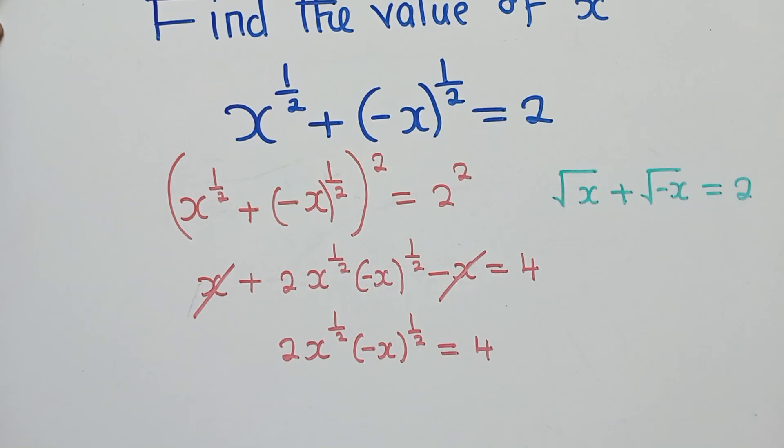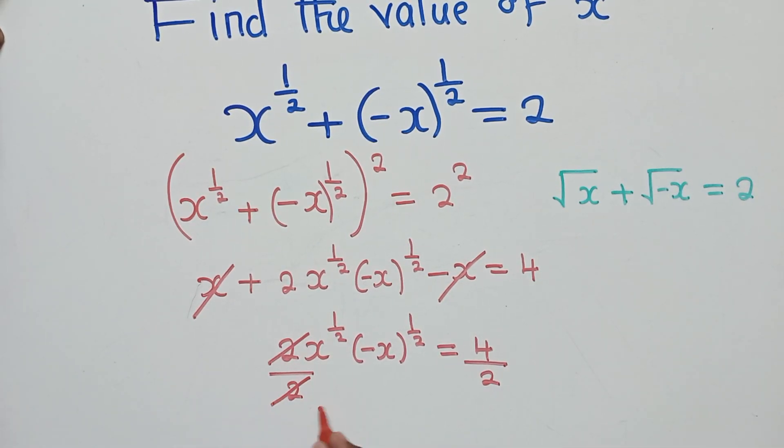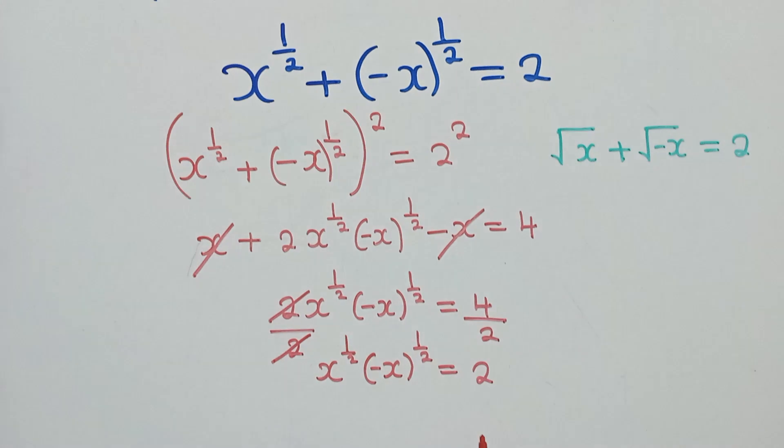So now, this side, it will cancel, we shall remain with x power 1 over 2, negative x power 1 over 2, which is equal to 2 there.